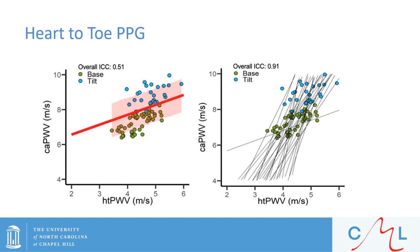These are findings from a paper currently under review, in which we looked at photoplethysmography pulse wave velocity. Specifically, we looked at agreement between heart-toe pulse wave velocity via PPG against standard carotid-ankle pulse wave velocity via the Vicorder oscillometric system. We found moderate overall agreement between these two devices. We also looked at repeated measures agreement following an orthostatic challenge and found strong agreement.